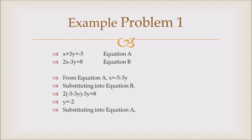Now if you substitute this value back into equation A, you get x + 3(-2) = -5. And if you solve this you get x = 1, so therefore x = 1 and y = -2.